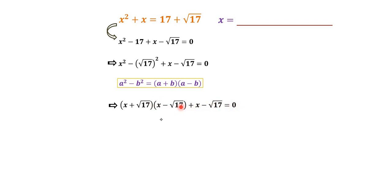Here we have x minus square root 17 appearing twice, so we can take out the common factor. Then we have x minus square root 17 times x plus square root 17 plus 1 equals 0.